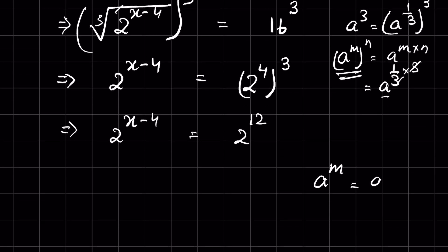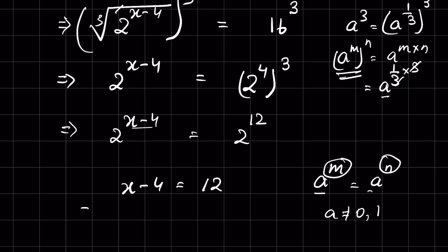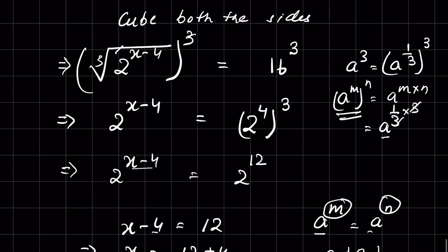Now using the rule: if a raised to the power m is equal to a raised to the power n, and a is not equal to 0 or 1, then m is equal to n. So the exponents are equal, meaning x minus 4 is equal to 12. Sending negative 4 to the right hand side gives x is equal to 12 plus 4, so x is equal to 16.